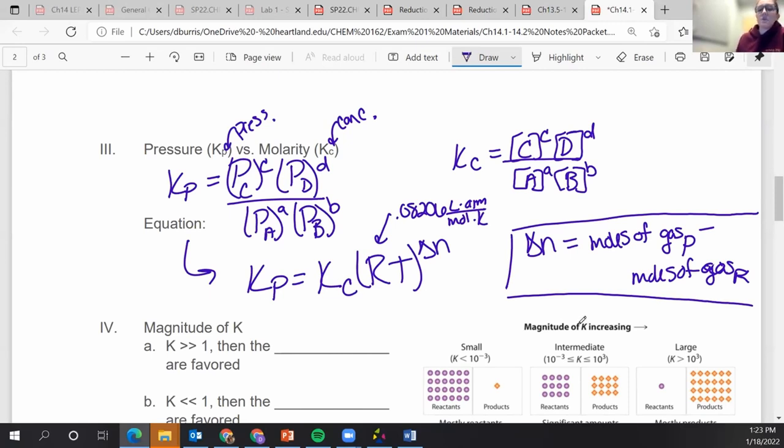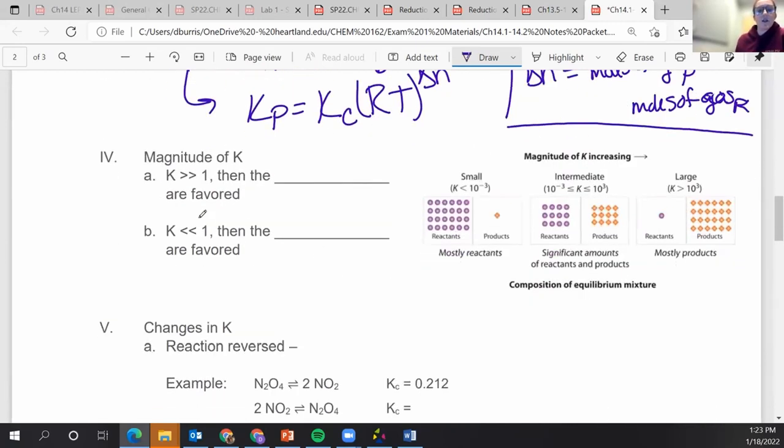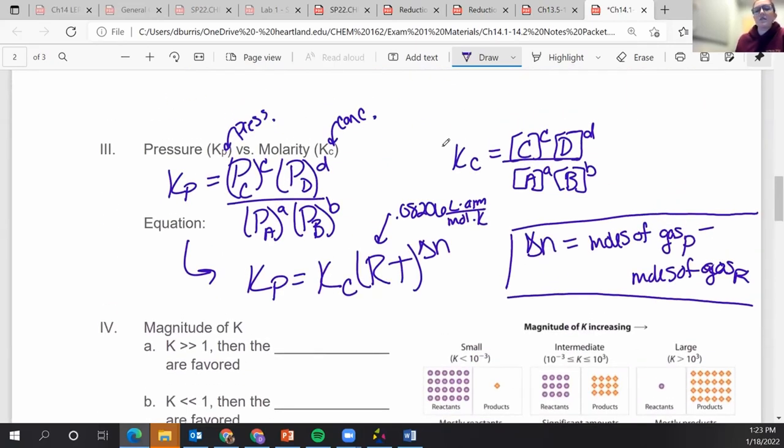So what does the K value mean? We're going to get more into this in the next lecture. But if K is really big, if you look at the K equation, that would mean I have larger numbers on the top, right? So I would have a lot of—or sorry, a lot of products. So that would mean that the products are favored.